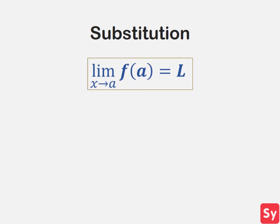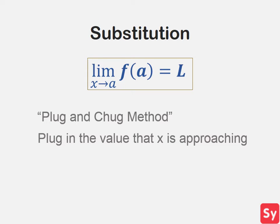The simplest way to find the limit of a function is substitution. Substitution is also called the plug and chug method. You plug in the value that x is approaching for x and the value of the function is the limit. When using the substitution method, the function value is the limit. It is important to note that the function value does not always equal the limit, so substitution in some cases may not be the best method.